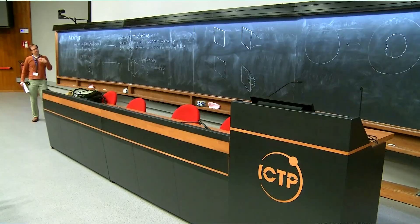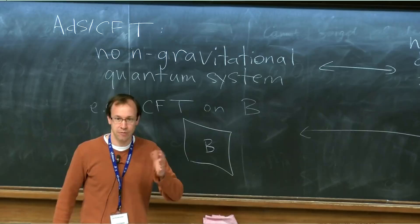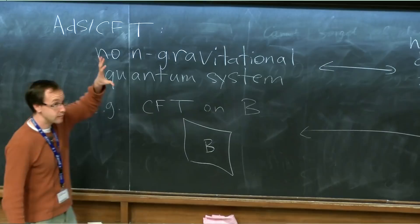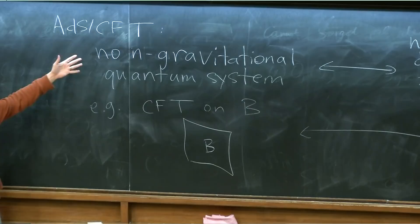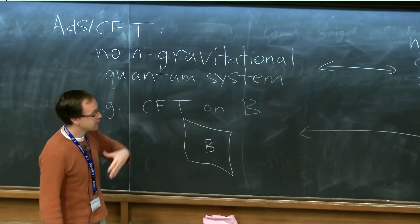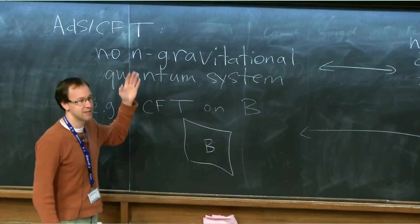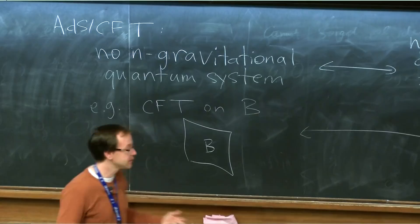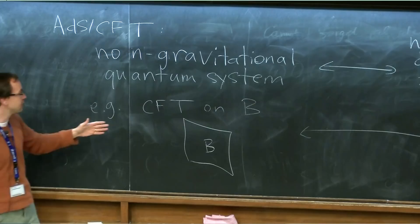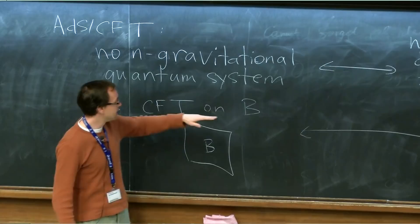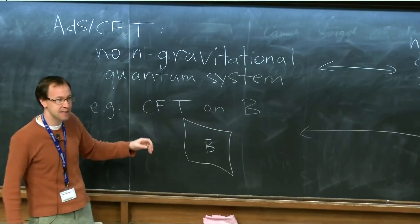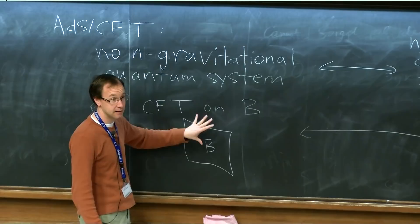I imagine that most of you have some familiarity with ADS-CFT. The basic idea is that we can define certain theories of quantum gravity starting with non-gravitational quantum systems — just ordinary quantum systems on some fixed space-time backgrounds. The simplest ones don't have any space at all; they're just quantum mechanics, matrix quantum mechanics models. But mostly I'll be talking about quantum field theories — certain conformal field theories on some fixed space-time background B.